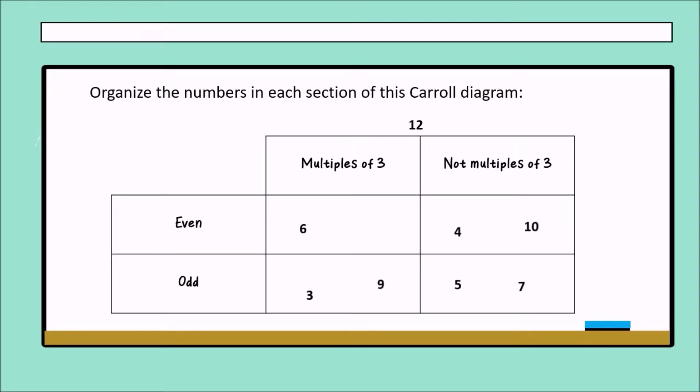Now, ten. Perfect. Ten is an even number and not a multiple of three. And finally, what do you think where must be 12? Absolutely. Here, in that place. Because three times four equals 12, and 12 is an even number.